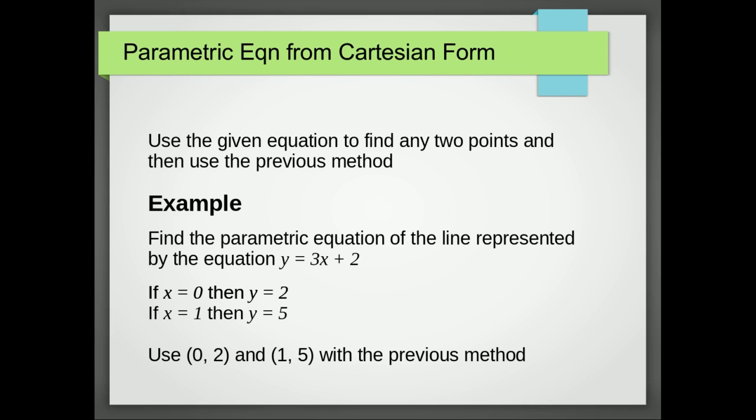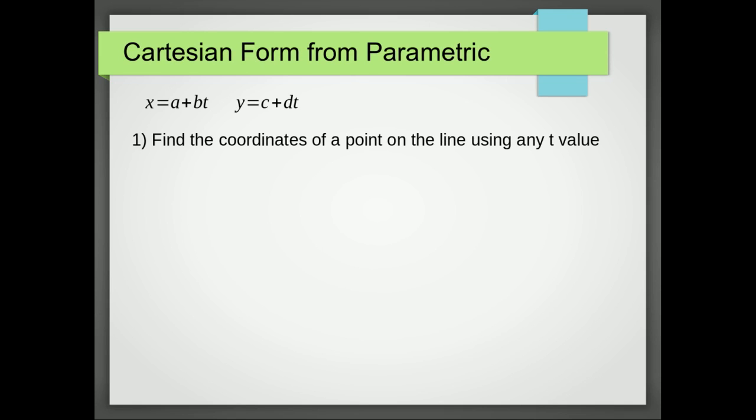What about if we want the Cartesian form from the parametric the other way around? Well, we need a point to find the equation of a line, and we saw that in Conics Part 1. And we can get that by just substituting the value for t. And t equals 0 makes sense. And then we need the gradient. And the nice thing is the gradient is simply d divided by b. That's the coefficient of t in the function of t for y, and the coefficient of t for the function of t for x.